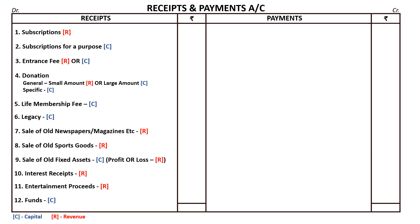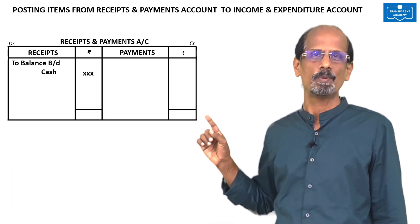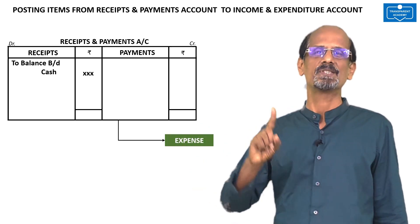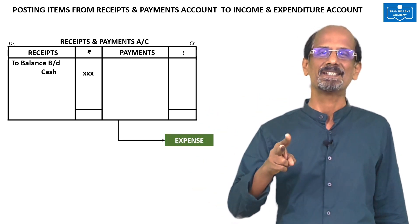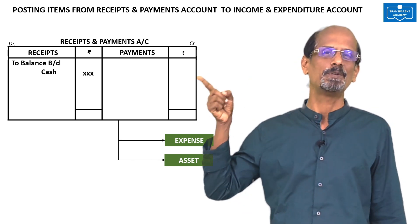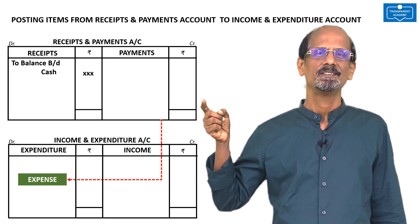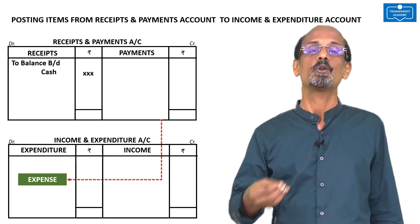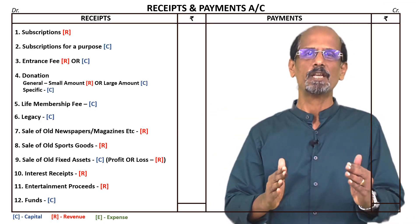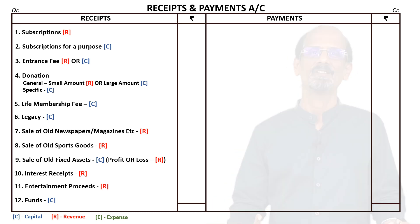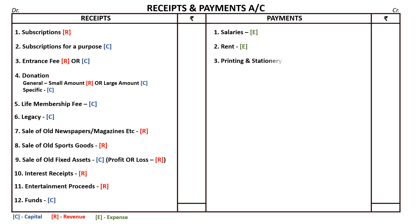Next is on the payment side. The items on the payment side of receipts and payments account may be classified into two: expense or revenue, and asset or capital. Only expenses will be debited to income and expenditure account. An item to be an expense, it must be of recurring nature. For example, salaries — naturally it is an expense, debited to income and expenditure account. Rent — debited to income and expenditure account. Printing and stationery — debited to income and expenditure account. Advertising — debited to income and expenditure account.